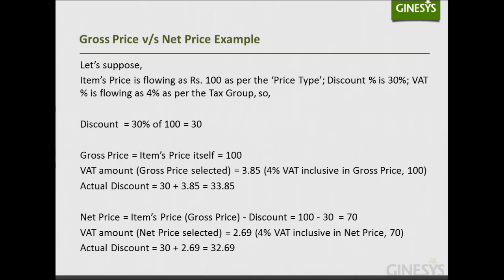Let's see an example. Suppose the item's price is rupees 100 as per the price type, the discount percentage is 30%, and the VAT percentage is 4% as per the item's tax group. The discount will be 30% of rupees 100, which is rupees 30. Gross Price is the item's price itself, so it will be rupees 100. The VAT amount if Gross Price is selected will be rupees 3.85, since 4% VAT is inclusive in the gross price. The actual discount will be 30 + 3.85 = rupees 33.85.